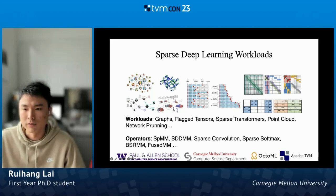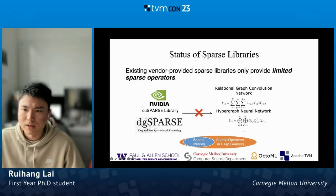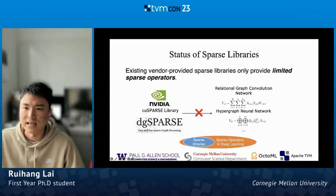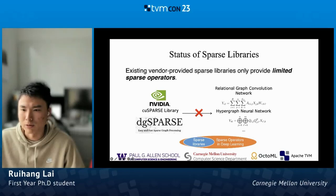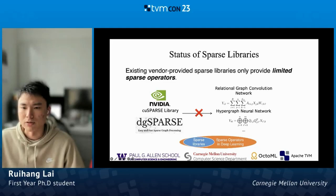Here are some existing solutions for sparse deep learning. The first is sparse libraries — hardware vendors such as NVIDIA and Intel have released libraries for sparse algebra. These libraries usually provide dozens of frequently used APIs, but they fail to cover emerging workloads such as graph neural networks on heterogeneous or hypergraphs, because these workloads cannot be expressed as two-dimensional sparse operations simply. Also, the library approach is not scalable because the possible combinations of sparse operators is exponential.